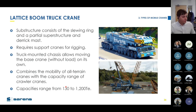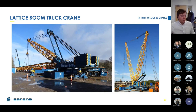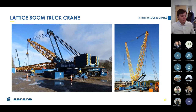Lattice boom truck cranes are quicker to demobilize and generally quicker to erect on site. They have comparable but not identical capacities to crawler cranes — 130 to about 1,200 tonnes. One key consideration: when rigging a lattice boom it must be laid flat, so if you've got a 60-metre boom you need 60 metres of clear space to rig it. Use cases are more limited than hydraulic cranes which don't need as much room to rig.